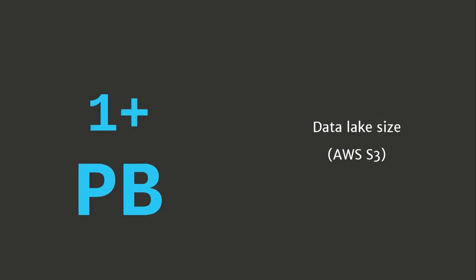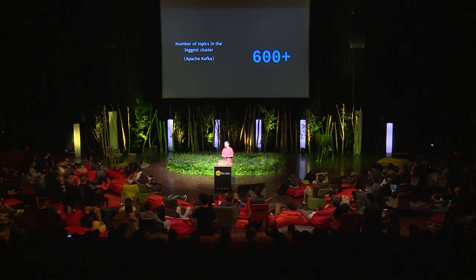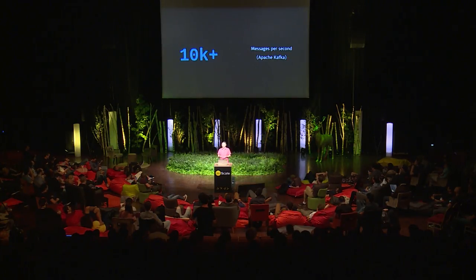A few numbers for you to understand the scale we're dealing with. We have petabytes of files in our data lake, many hundreds of topics in our largest Kafka cluster, and we process tens of thousands of messages per second. This number is always growing, and the message size varies from 200 bytes to 20 kilobytes — so it's very different.